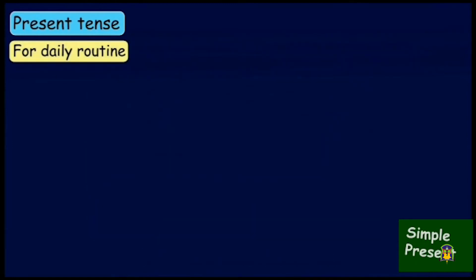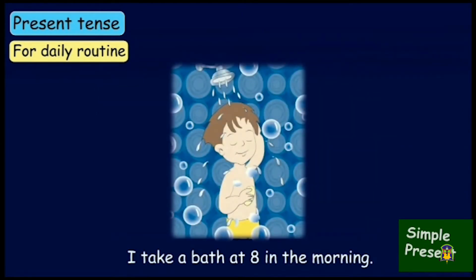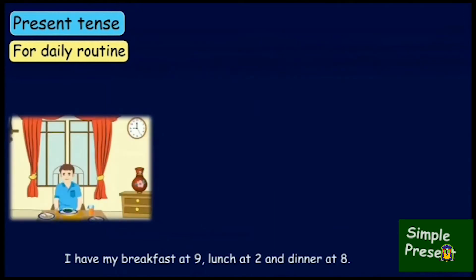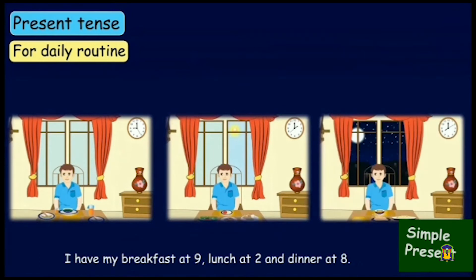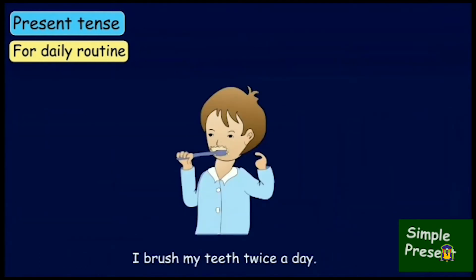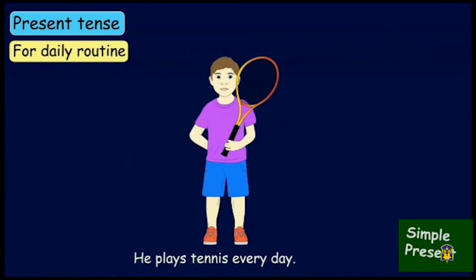We always mention our daily routine in present tense. 'I work in my office from 9 to 5.' 'I take a bath at 8 in the morning.' 'I have my breakfast at 9, lunch at 2, and dinner at 8.' 'I brush my teeth twice a day.' 'I go for swimming classes daily.' 'He plays tennis every day.' All these sentences tell about the daily routine, so we have used present tense here.